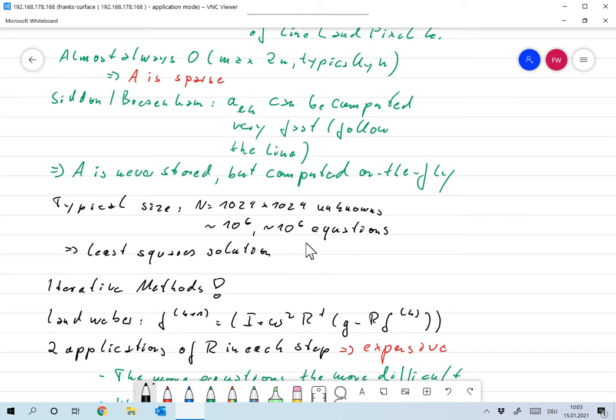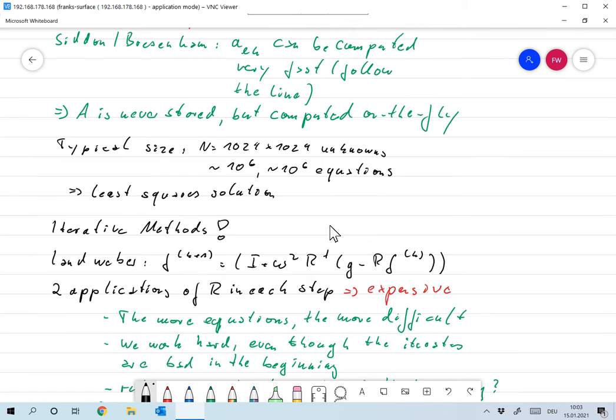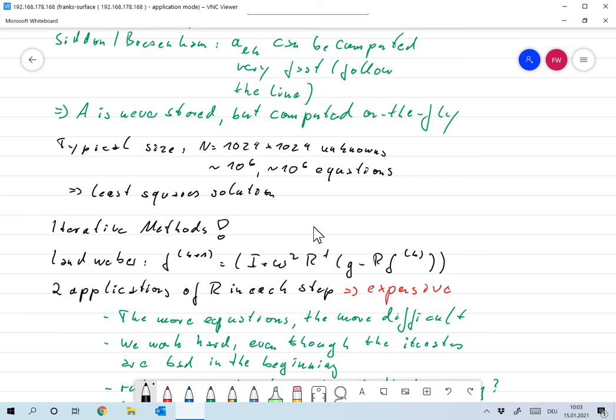Of course, usually we have more equations than unknowns, so we'd be looking for a least squares solution of the equation above. You wouldn't probably want to do Gaussian elimination for that, so you would like to use iterative methods and thus make use of the sparsity of the matrix.